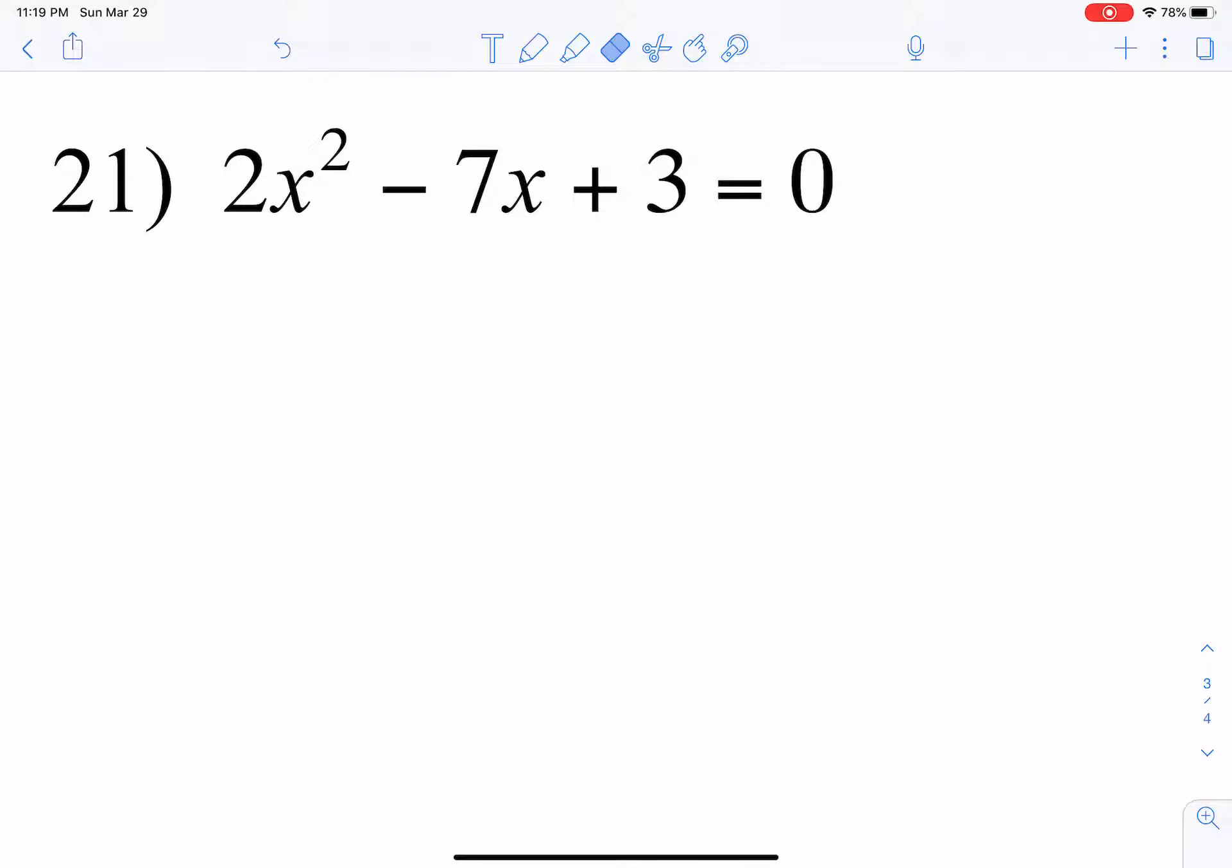To solve number 21, what you want to first do is observe the equation. As you can see, this is a trinomial because there's x squared, x, and a 3.